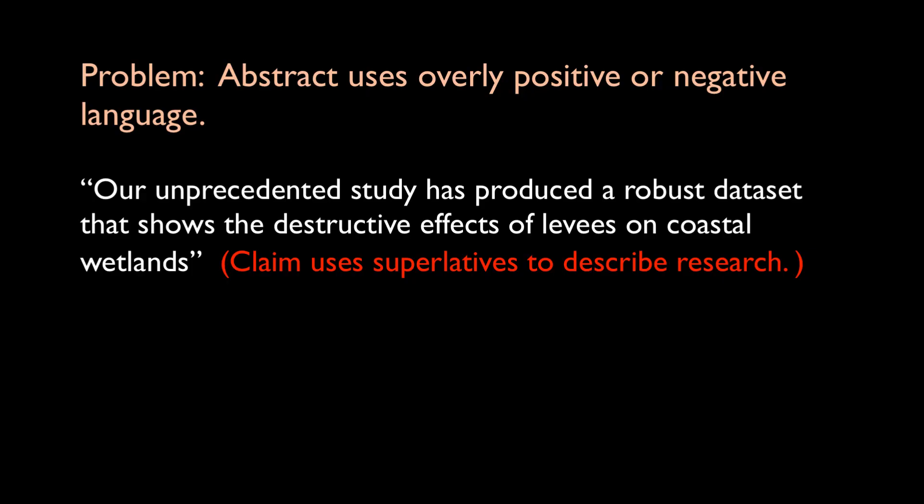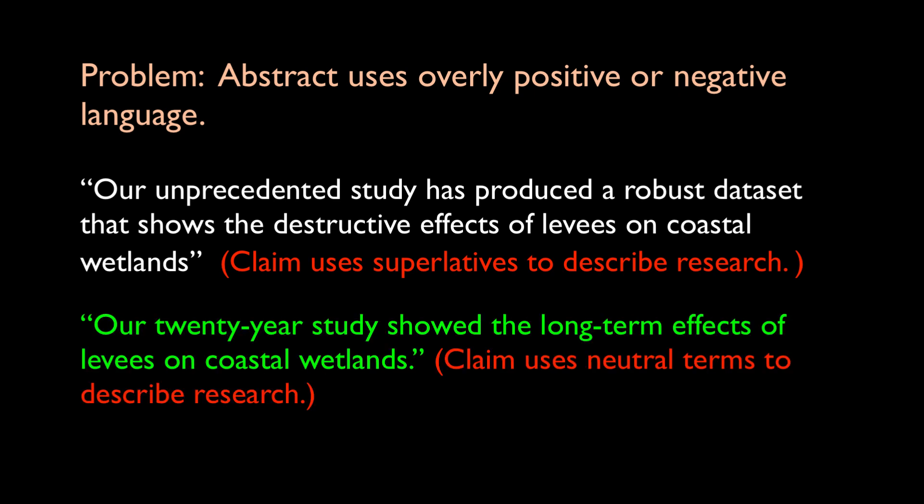A final example of distortion in abstracts is the use of overly positive or negative language in an attempt to make the research finding sound more exciting than it is. In this hypothetical example, the authors use superlatives to describe their research. Other positive superlatives include amazing, creative, groundbreaking, innovative, novel, and outstanding. Negative words such as apocalyptic, catastrophic, disastrous, or ruinous may also be used to elevate the importance of a problem that was studied. Be sure to select the appropriate term to describe your research. In most cases, neutral terms are the best choice. This revision conveys the information using neutral terms.